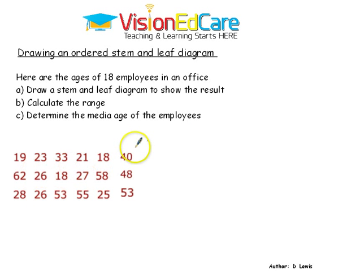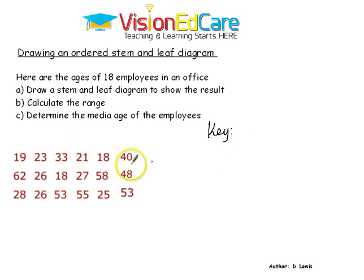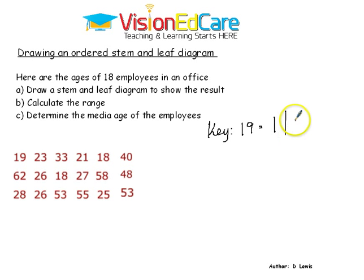The first thing you need to do is to make a key. All you have to do is select one of the numbers from the list. So let us select 19, and that equals to 1 forward slash 9. The one here is the stem and the nine is the leaf.